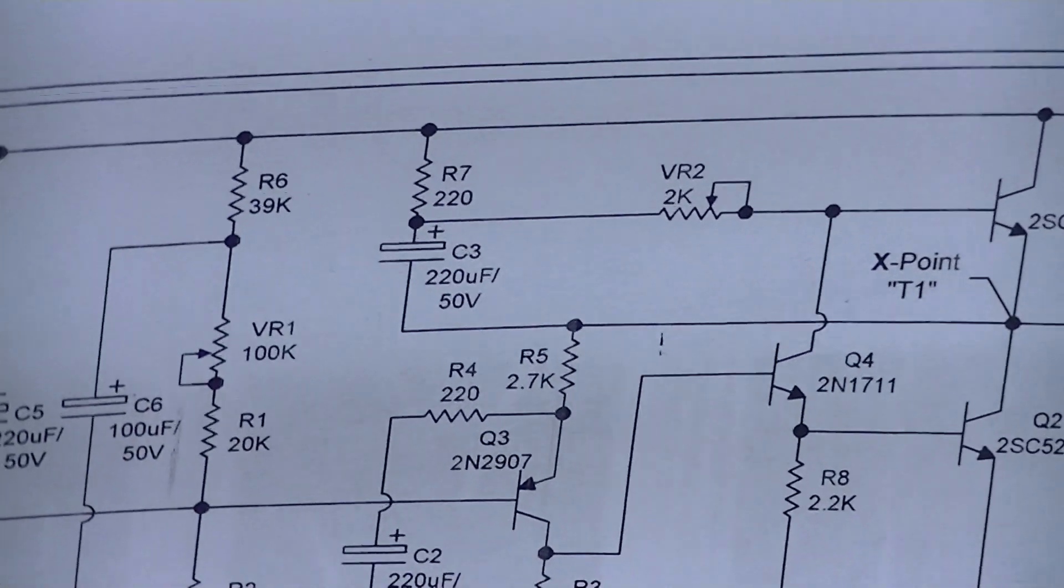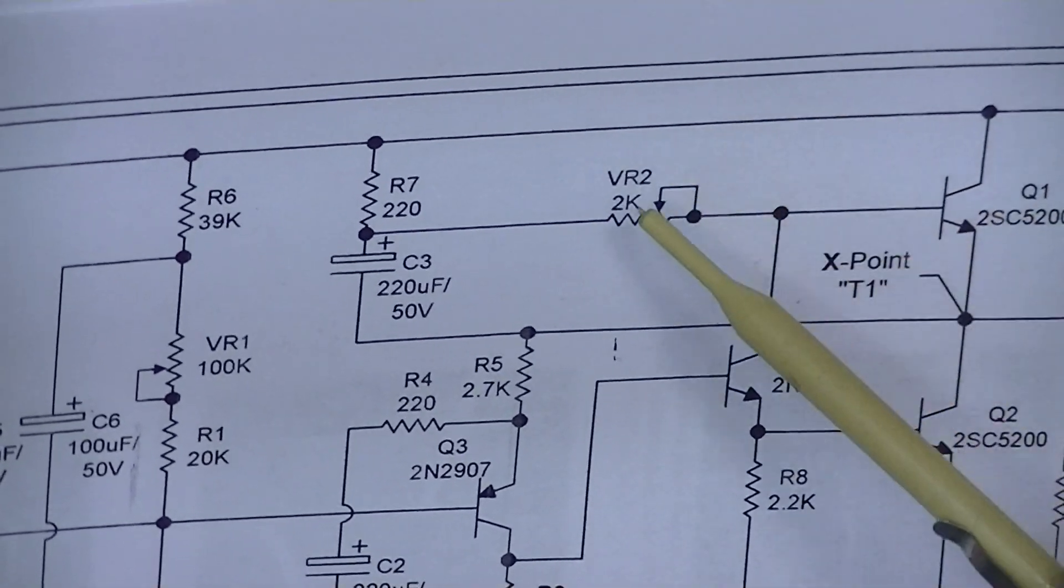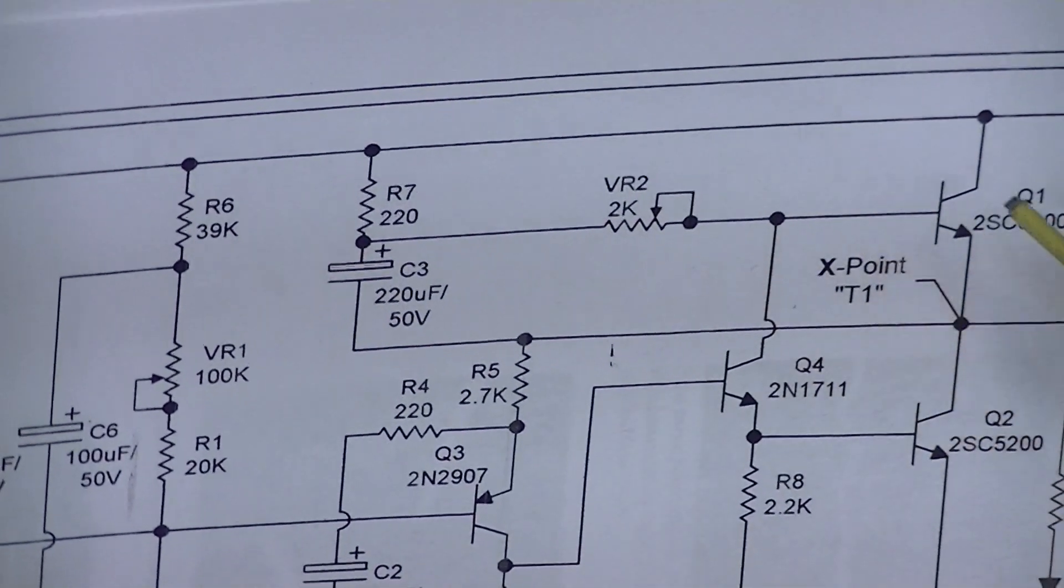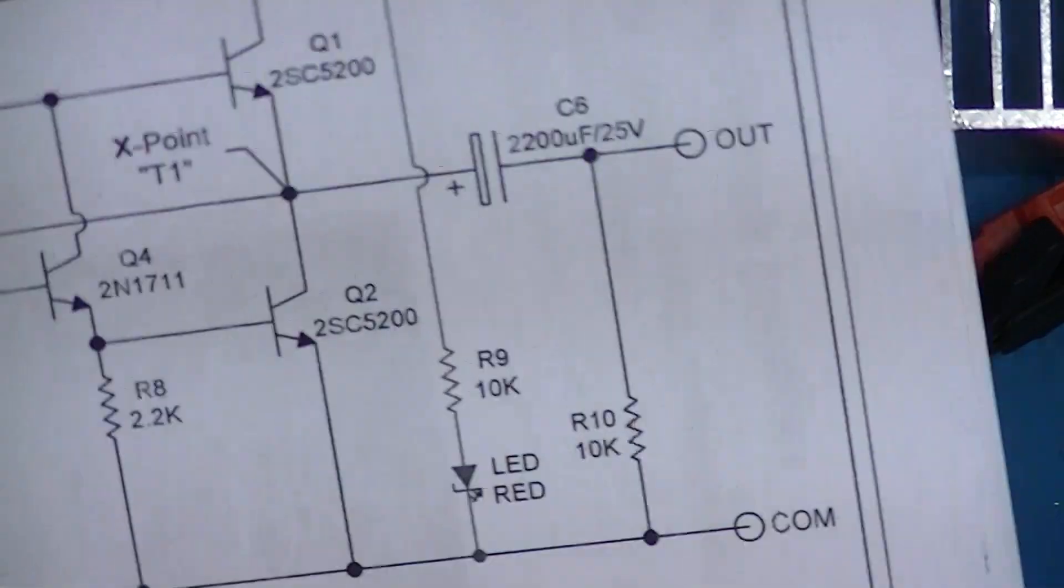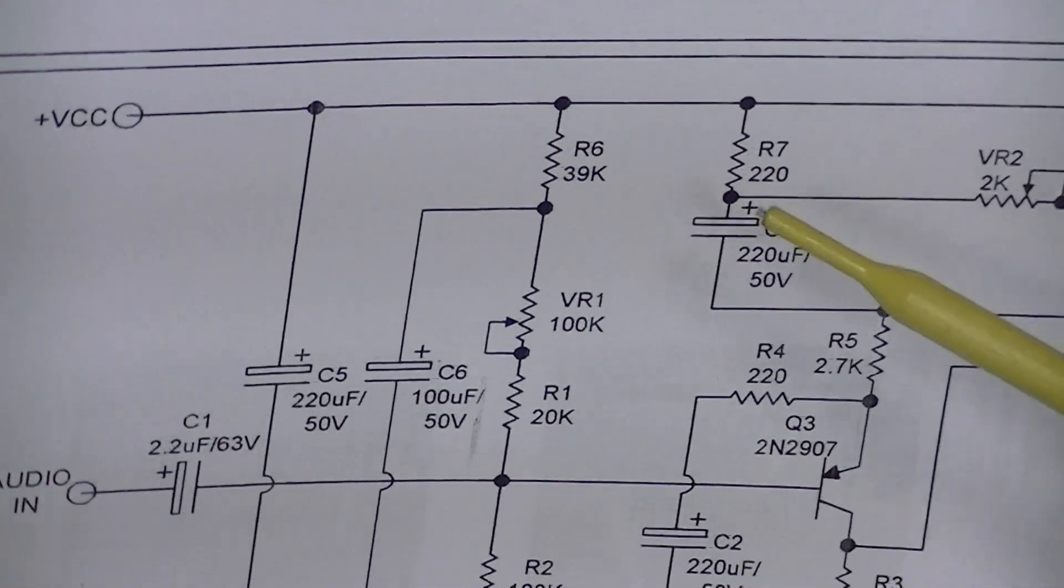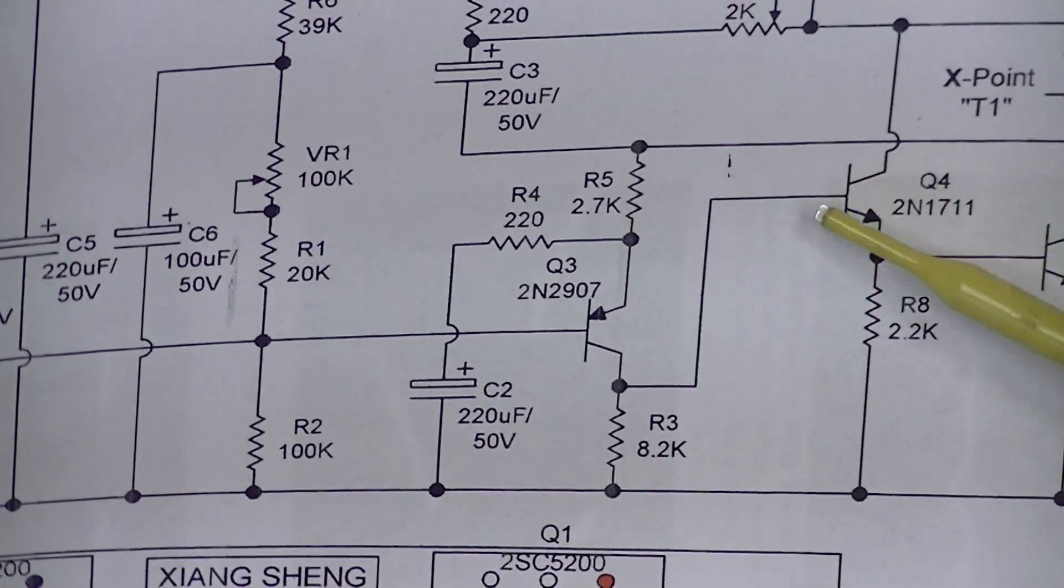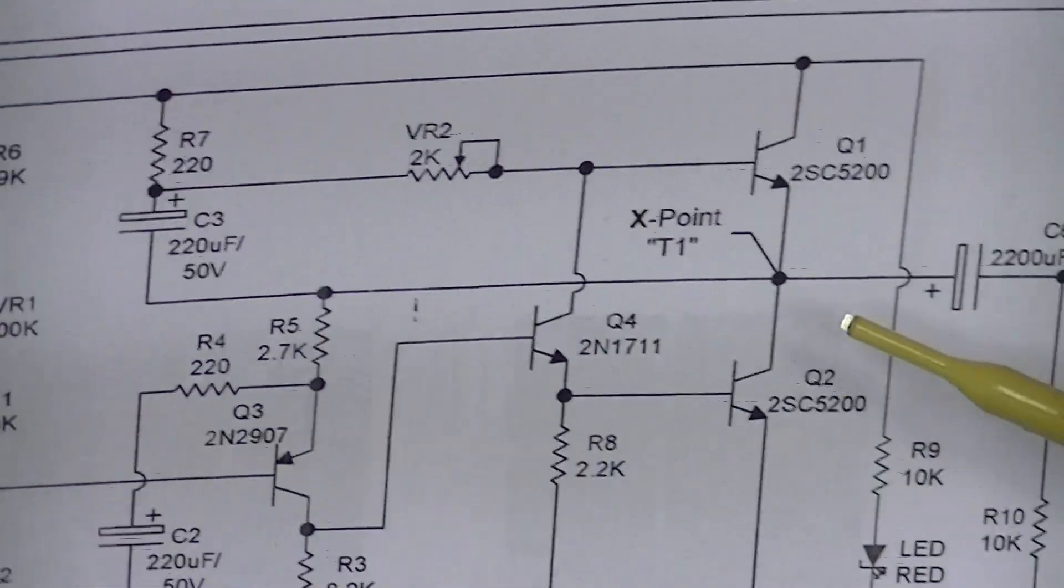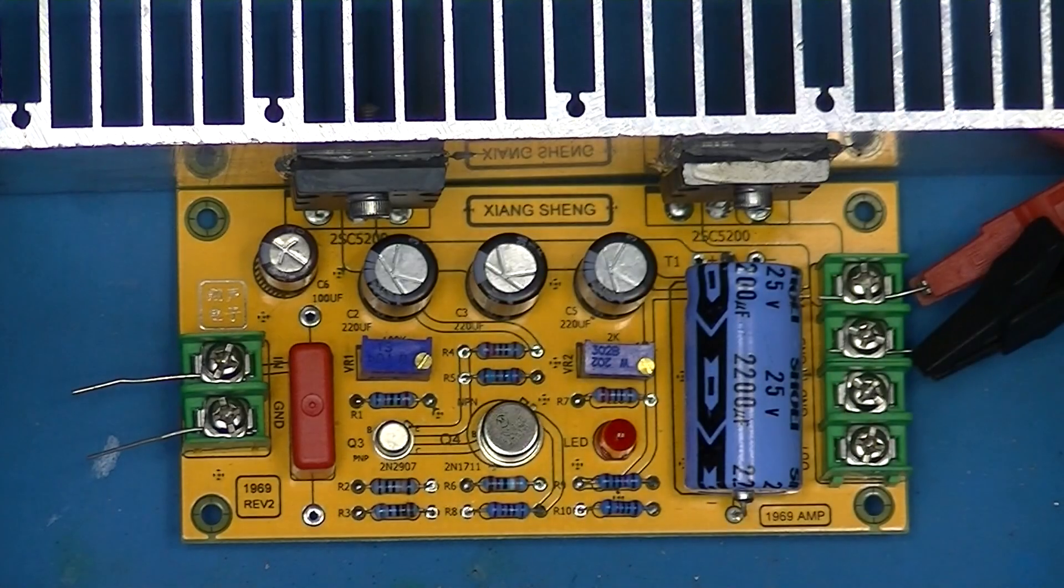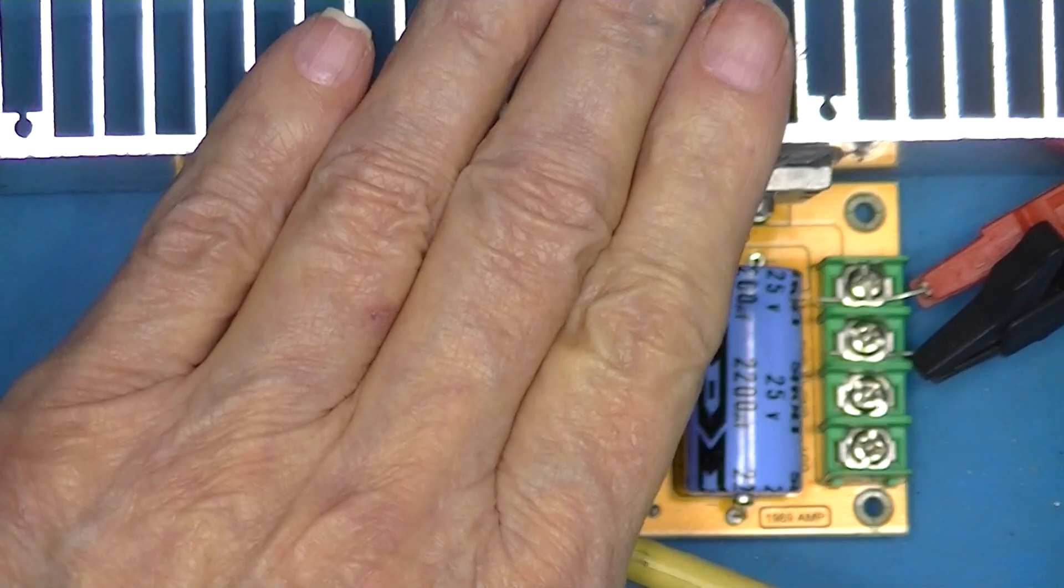The other thing that more recent versions of the JLH amplifier have is a variable resistor here. JLH used a fixed resistor, and that adjusts the current through this. Most people just measure the current supplied, assuming that the current through these transistors will be inconsequential. So I adjusted this using this to one amp. 24 volts at one amp, that means I'm going to dissipate 24 watts here.